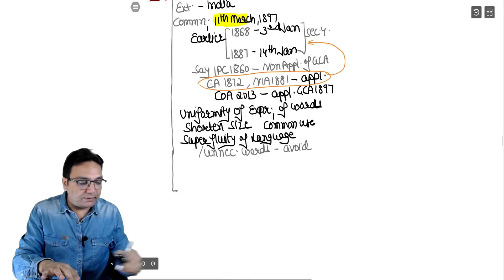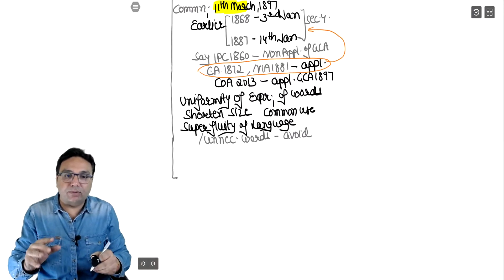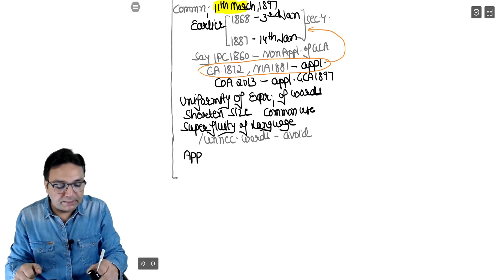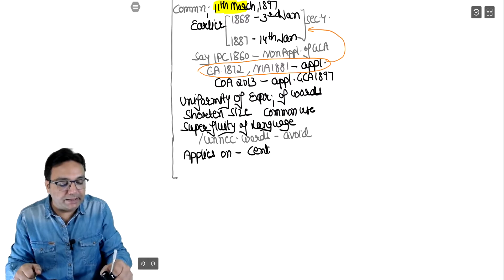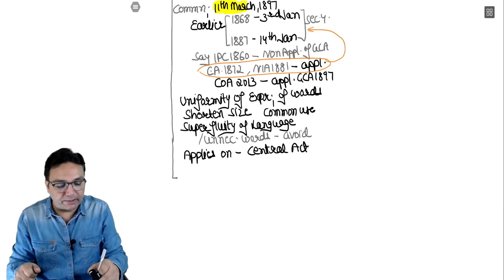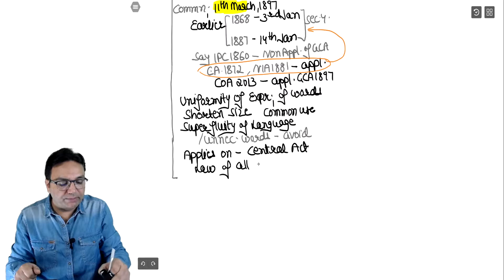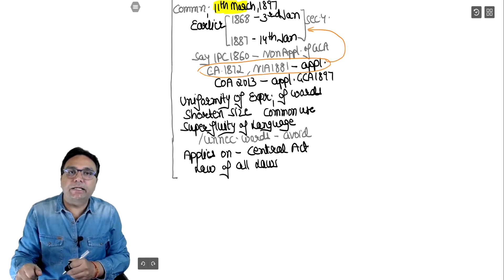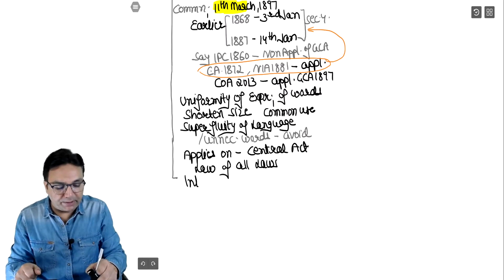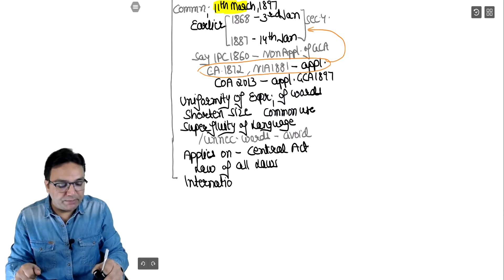This act applies on central acts because it is a central government act - wherever central acts go, GCA goes. So we also call this 'law of all laws', and internationally it is called the Interpretation Act, because it is helping other acts.